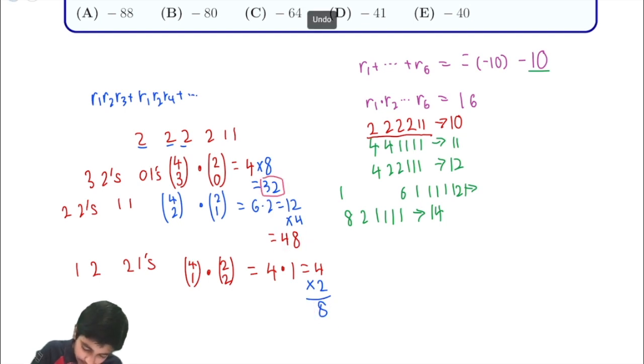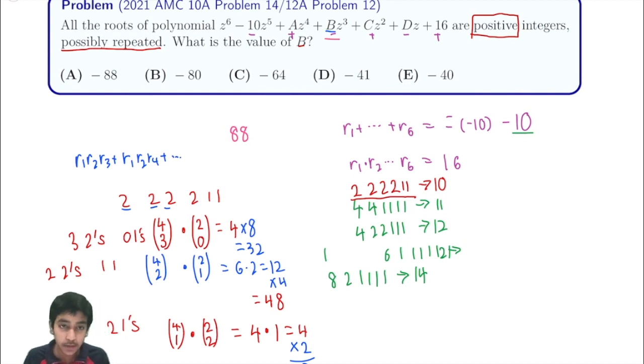We add up 32 plus 48 plus 8 to get an answer of 88. Probably shouldn't have boxed them all, but the sum is 88. But that's not our answer. Remember, negative, positive, negative. Negative. So the B coefficient is actually going to be negative of that. So negative 88. And in this case, they're lucky. They didn't want to trick you, so they didn't put 88 as an option choice. Because if they did, I'm sure many people would have actually selected that. So again, be careful about your signs,